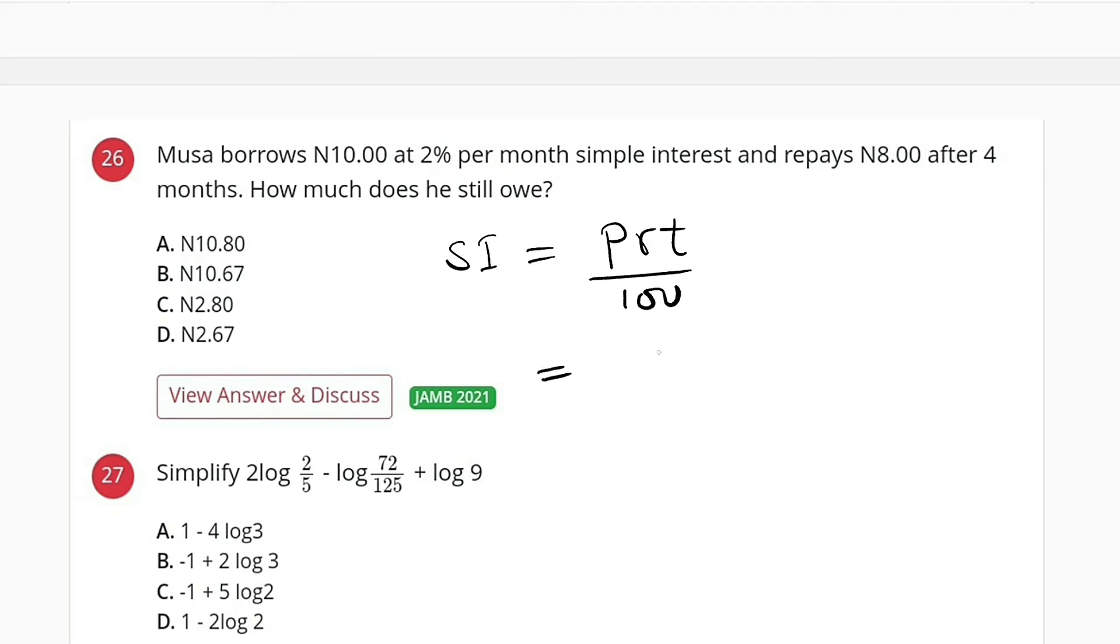From here you can see the principle, the amount he borrowed is 10, times the rate is 2, times the time for 4 months, divided by 100.